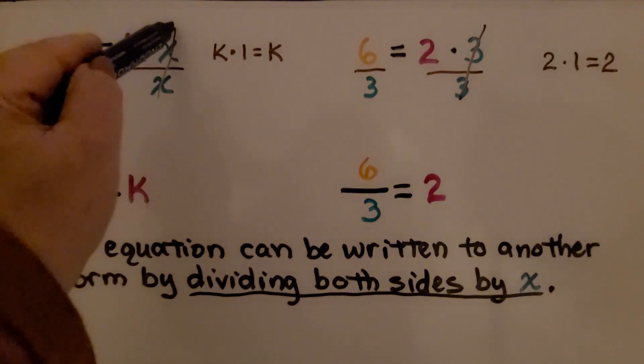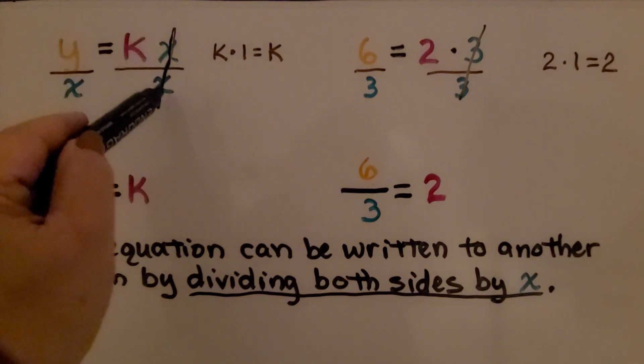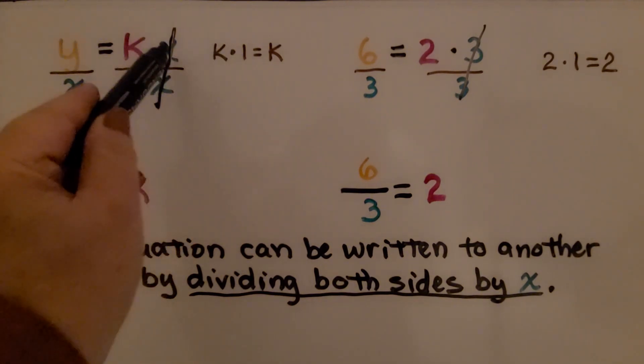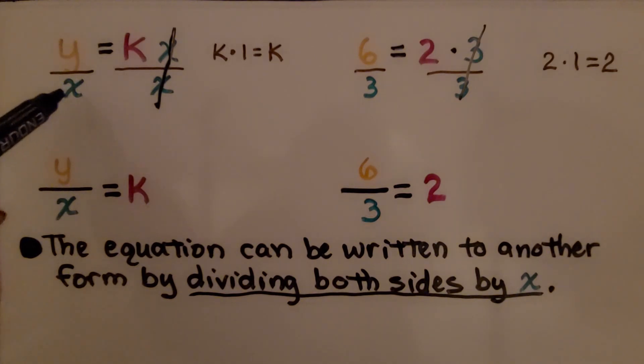When we do that, these have the same numerator and denominator, and it becomes a 1. So we have k times 1 on this side, and we have y divided by x on this side.